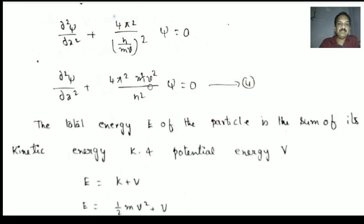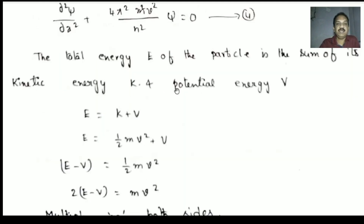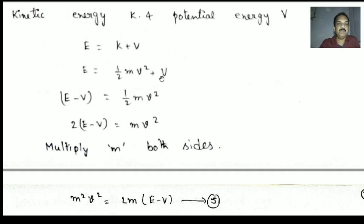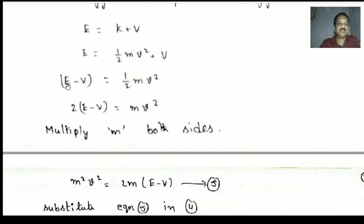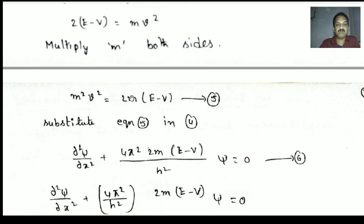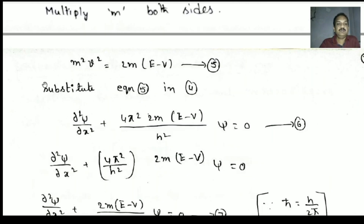Now we eliminate the classical terms mv. The total energy E equals kinetic energy K plus potential energy V. So E = ½mv² + V, giving E − V = ½mv². Multiplying both sides by m: m²v² = 2m(E − V). Substituting into equation 4: ∂²ψ/∂x² + (4π² · 2m(E−V)/h²)ψ = 0. This is equation number 6.